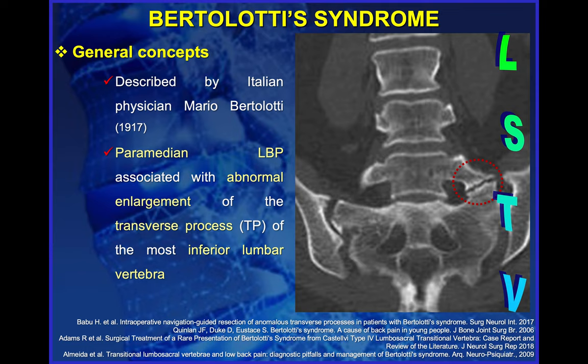More than a century ago, Mario Bertolotti described this pathology, which consists of typical lower back pain at the paramedian region on the buttock area, associated with a pseudo-joint and a lumbosacral transitional vertebra, usually ipsilateral to the pain.